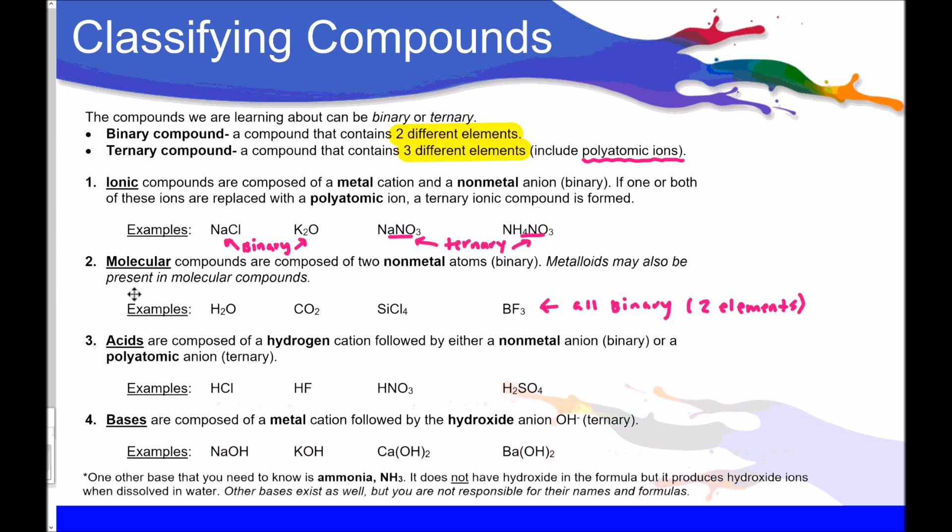Acids. Acids are composed of a hydrogen cation that's really, really important, followed by either a nonmetal anion or a polyatomic ion. If something starts with hydrogen, like all these examples, you know it's an acid, but then you have to distinguish if it's binary or ternary. So HCl and HF, no polyatomic ions. They're acids, but they're binary acids. Then over here, we've got HNO3 and H2SO4. NO3 and SO4 are polyatomic ions. So these are ternary acids. So remember, ternary if it includes a polyatomic ion.